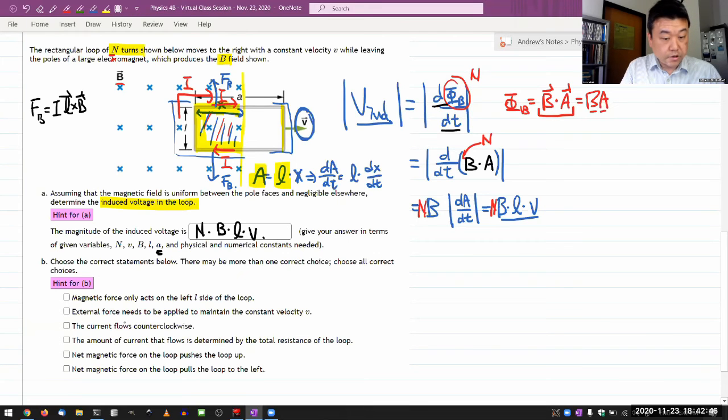External force needs to be applied to maintain the constant velocity. That is actually correct. And the way you get it is, these two forces balance out. For the net force, I don't need to worry. And when you figure out the force on this segment here, you do I cross B, and the direction of the force points to left. So there's a leftward magnetic force, the velocity points to right. So unless there's an additional force, external force, this will be slowing down. So external force needs to be applied.